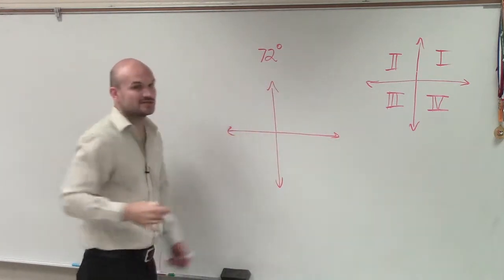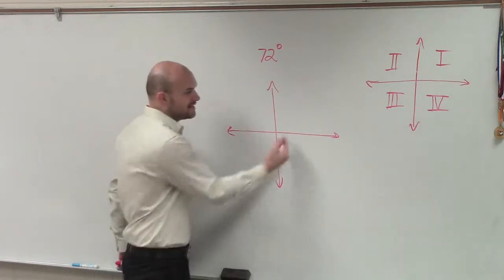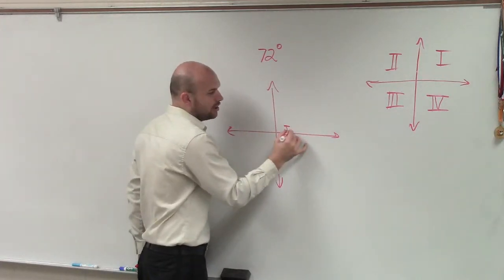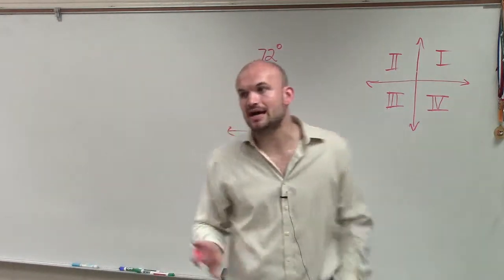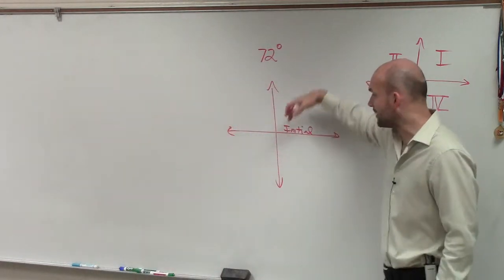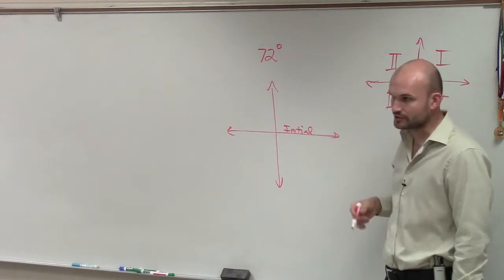Remember, where students are going to get mixed up with this is they're not going to remember our initial side. All of our angles are going to be in standard form, so they're going to start at your initial side. Then I just need to rotate my rays from this initial side to 72 degrees.